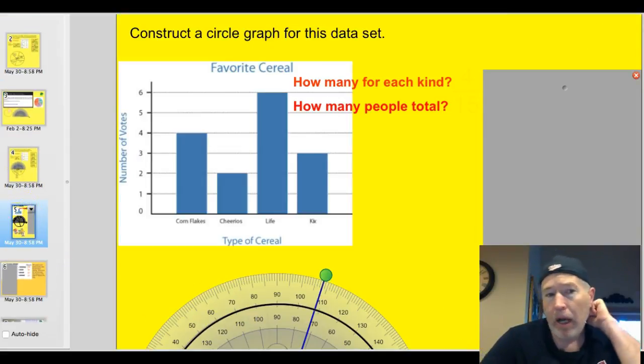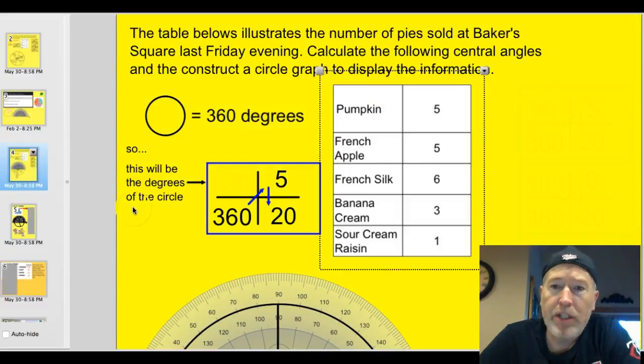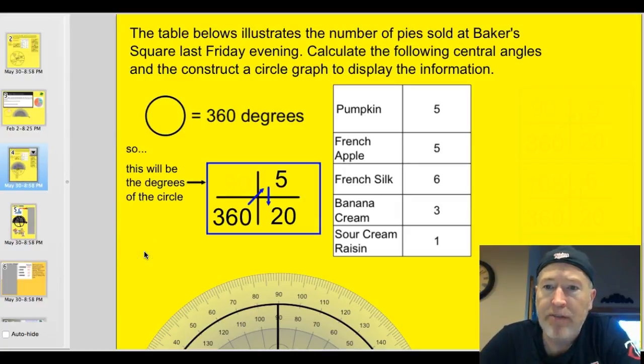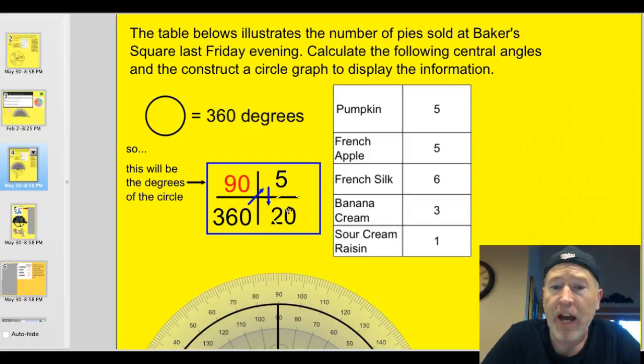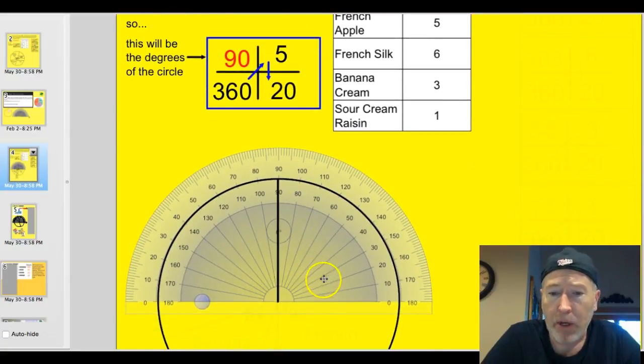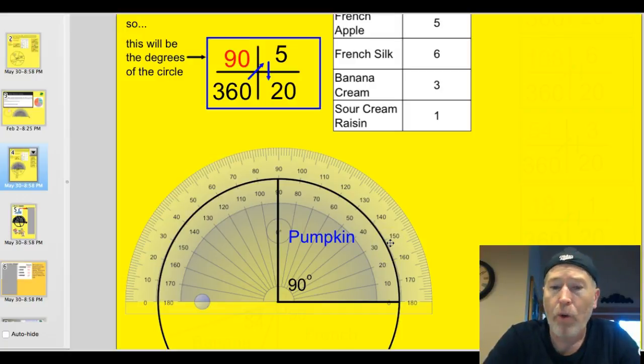So let's look at another example here. Oops. This one here. The table below illustrates the number of pies sold at Baker Square last Friday evening. Calculate the following central angles and construct a circle graph to display the information. Well, now we don't have percentages. We just have a tally chart. And that's still okay because you can still create a ratio proportion box. So if you add all these pies up, 5 and 5 is 10. Here's 16, 19, and 20. I have a total of 20 pies. And so I'm going to set up a ratio proportion. So pumpkin is 5 out of 20 is the same as something out of 360. So you multiply diagonally, 360 times 5, divide by 20, and you've got 90. That makes sense. 90 is a quarter of 360, and 5 is a quarter of 20. So we can come down here, and we can go ahead and set up a 90-degree angle, and we can see we've got our pumpkin all ready to go. That was an easy one, the 90s.